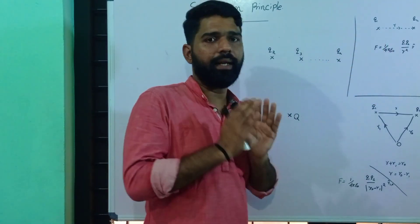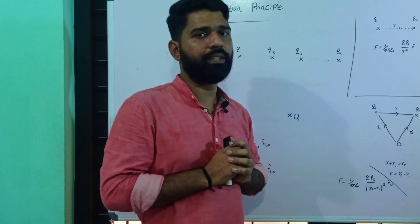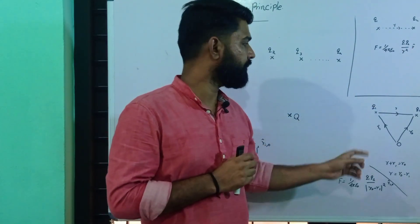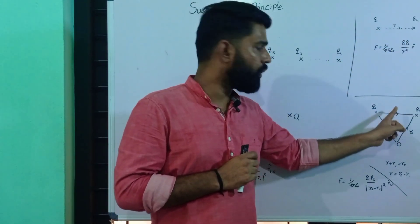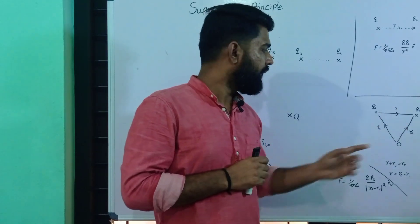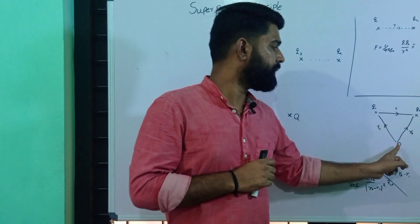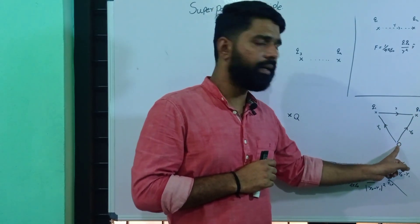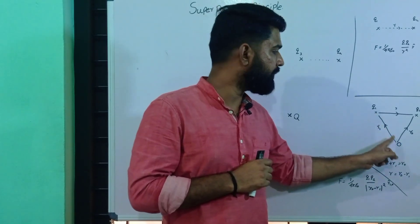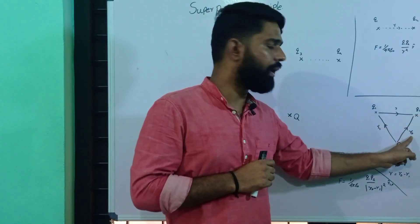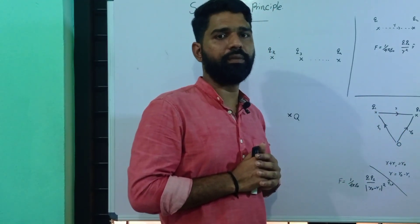Now let's look at this in detail. We will consider two charges Q1 and Q2 separated by a distance r. If we call this r, it is actually r0 minus r1. The distance between the origin and Q1 is equal to r1, and the distance between the origin and Q2 is equal to r0. So r1, r0, and r — these three are position vectors.